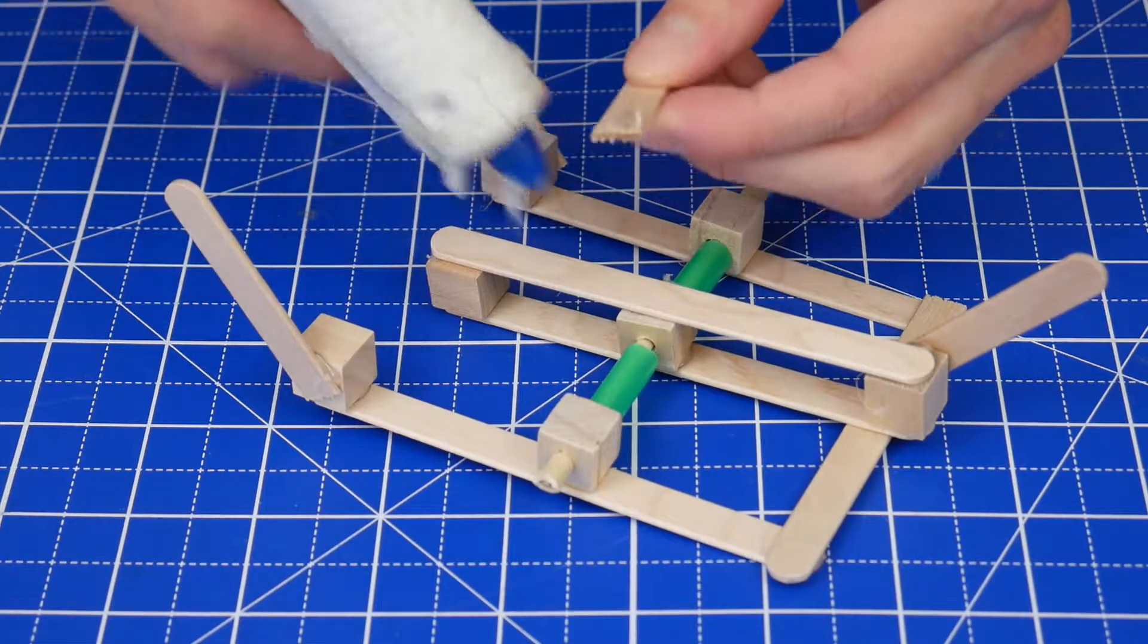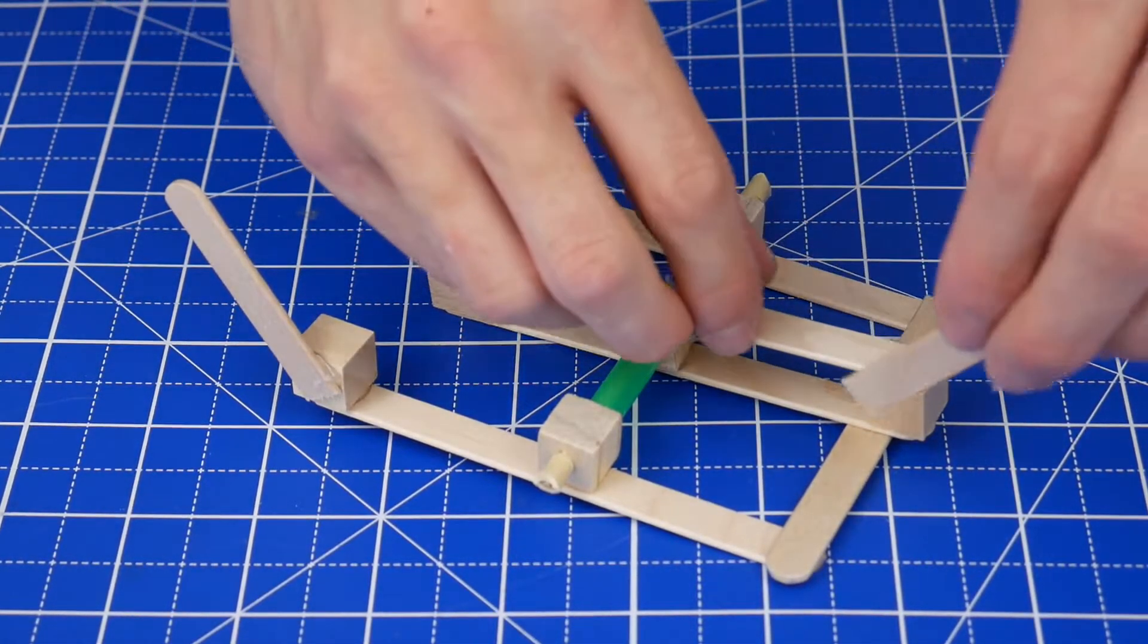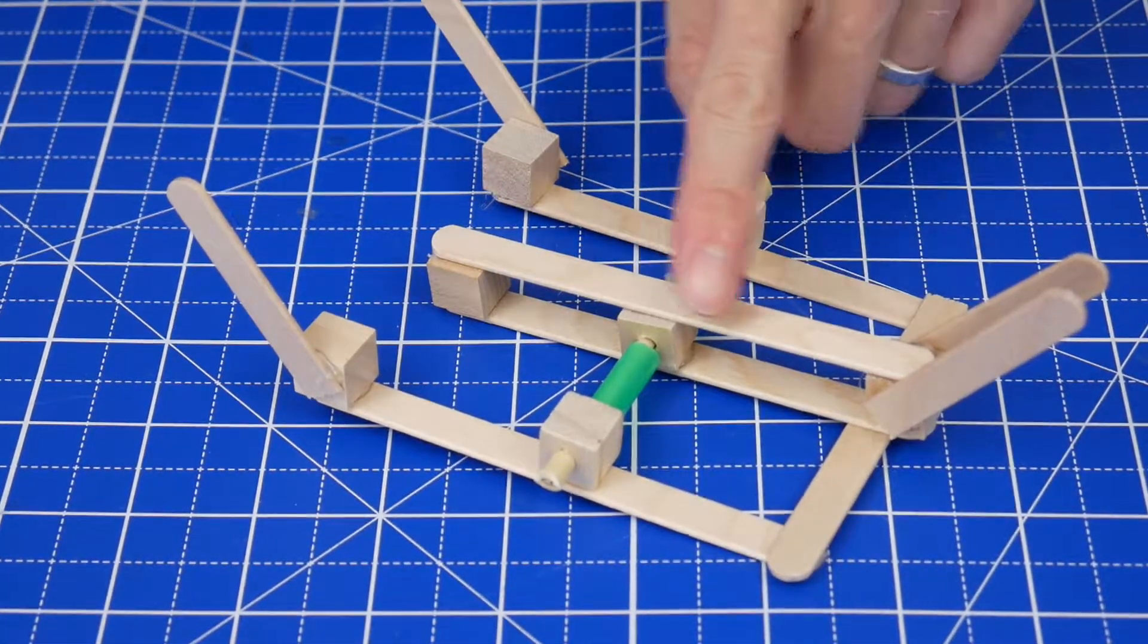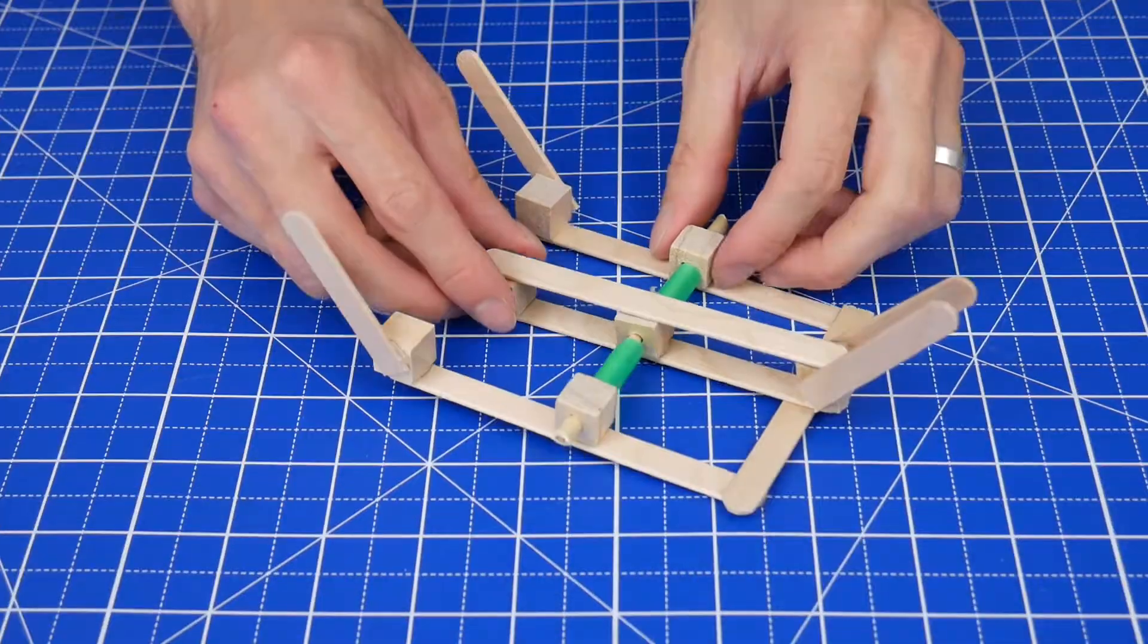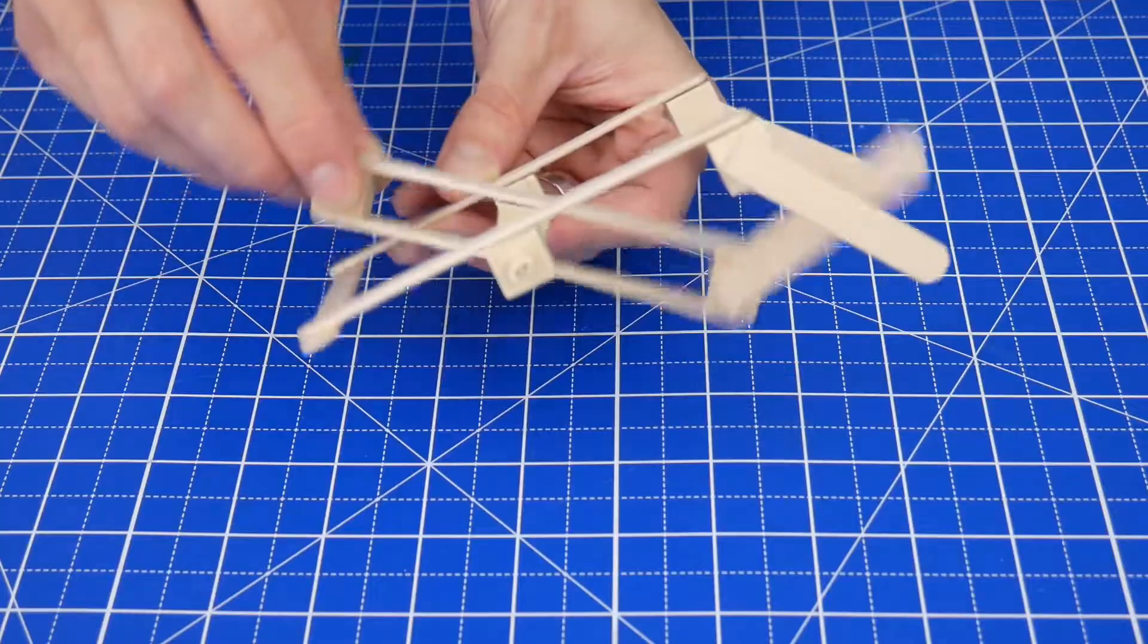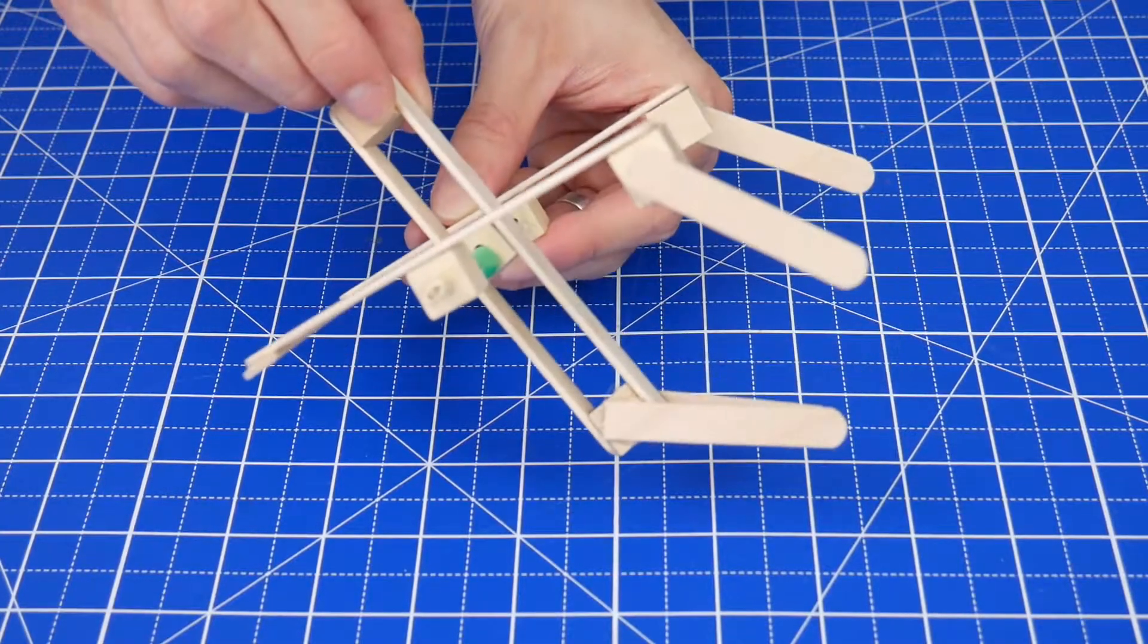And finally, glue on two more half craft stick pieces onto this cube at an angle, again pointing away from the hinge. Now you can see when I lift this up and bring the fingers together, you can see how the hand part of the mechanical hand is coming together.